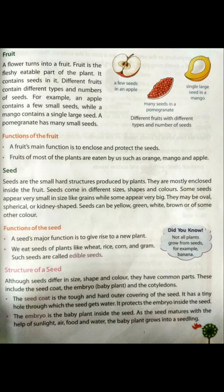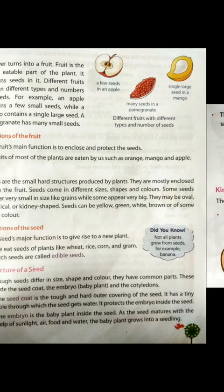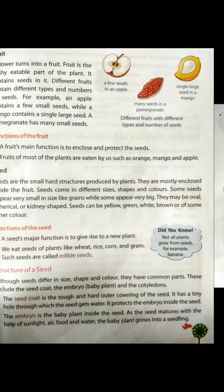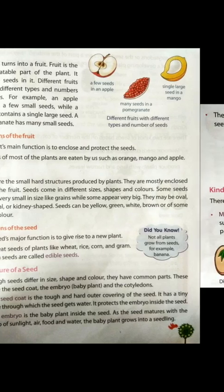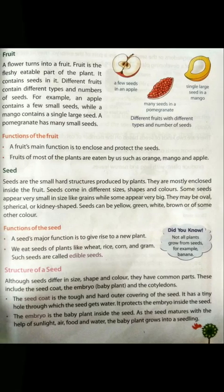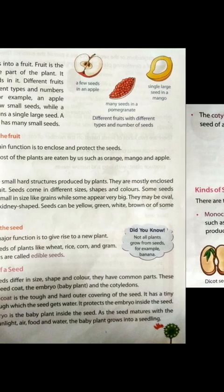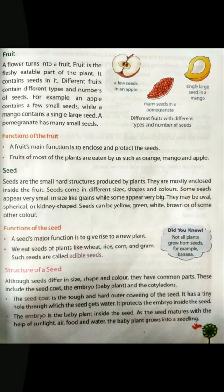Some seeds appear very small in size, like grains, while some appear very big. They may be oval, spherical, or kidney shaped. Seeds can be yellow, green, white, brown, or some other color. So different size, different shape, and different color.